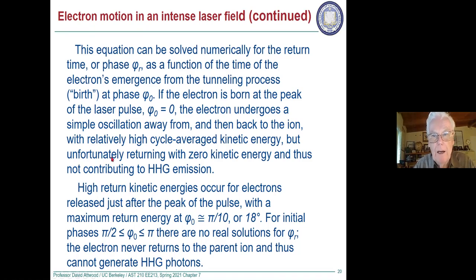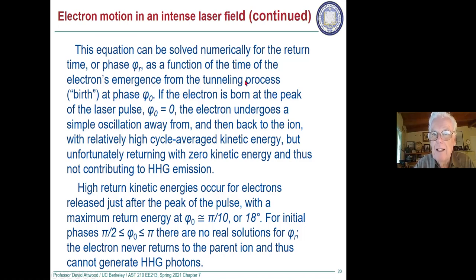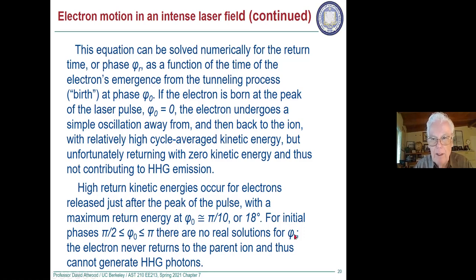The highest return energy occurs when the phase is pi/10, or 18 degrees — just beyond the peak of the pulse. For initial phases between 90 degrees and pi, there is no real solution — the electron never returns at all. So there are several interesting cases: born at the peak returns with no energy; born at 18 degrees returns with maximum energy; born before the peak never returns.